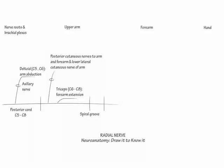Note: when the radial nerve is injured in the axilla, the proximal sensory nerves and triceps are affected. But in an injury at the spiral groove, they are unaffected, as their takeoff from the radial nerve is proximal to the spiral groove.